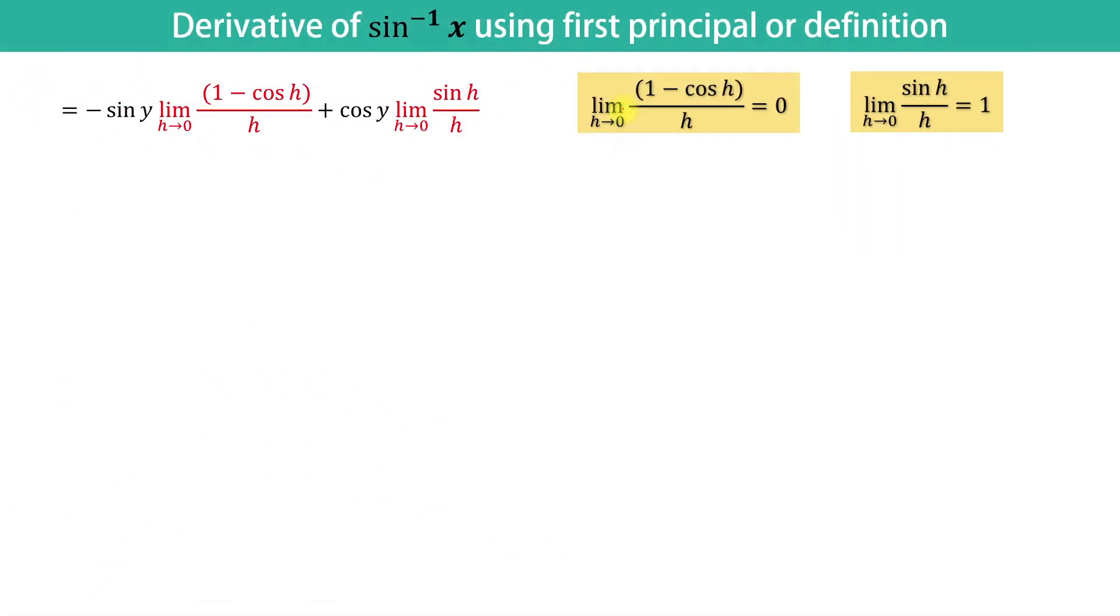By using the formula, limit of 1 minus cos h upon h when h tends to 0 is equal to 0, and limit of sin h upon h when h tends to 0 is equal to 1. Hence, dx upon dy is equal to cos y.